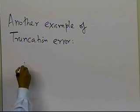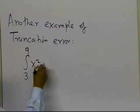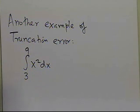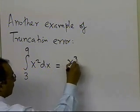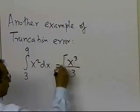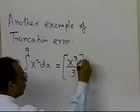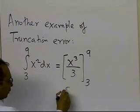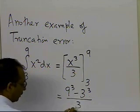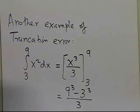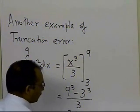For example, if somebody tells you to integrate a function from 3 to 9 of x squared dx, you can use your integral calculus background to do this. You will say this is equal to x cubed divided by 3, with the lower limit 3 and upper limit 9, so you get 9 cubed minus 3 cubed, divided by 3, and that turns out to be 234 — the exact value.